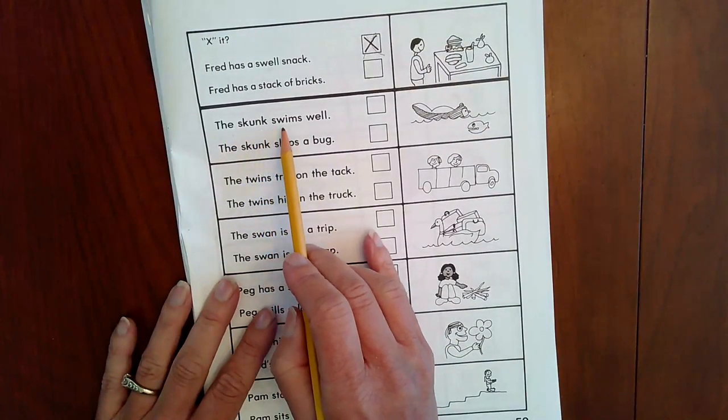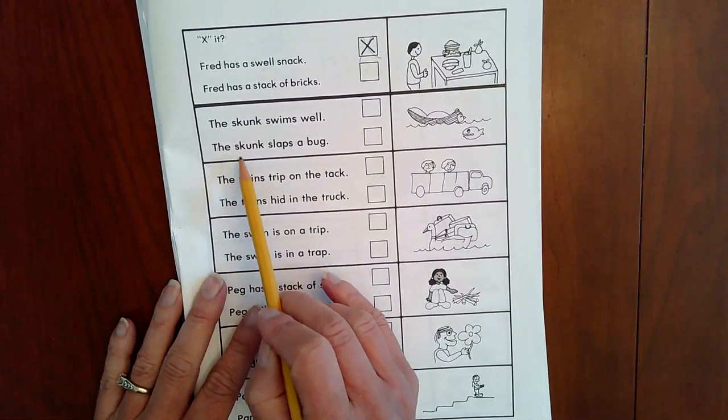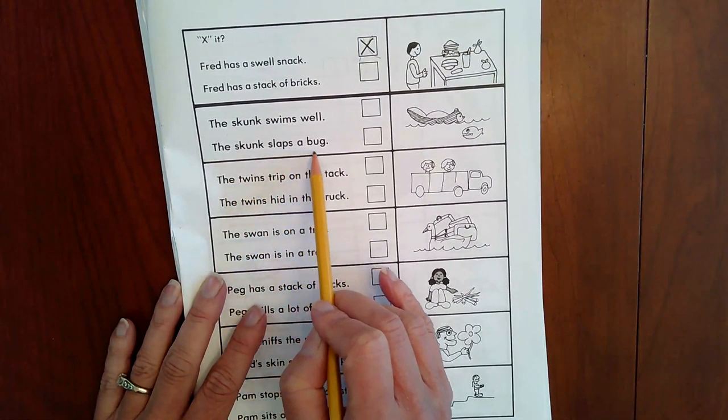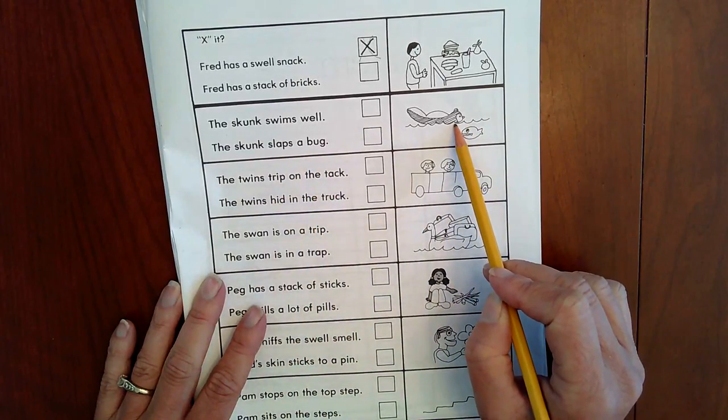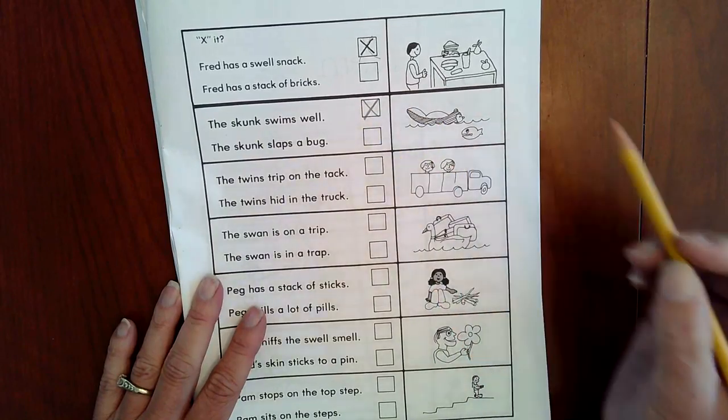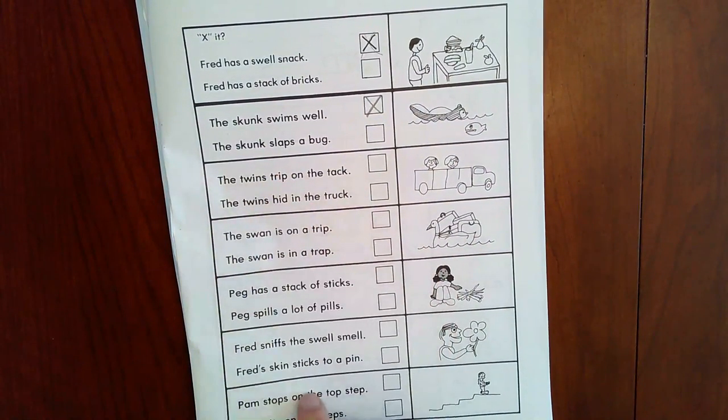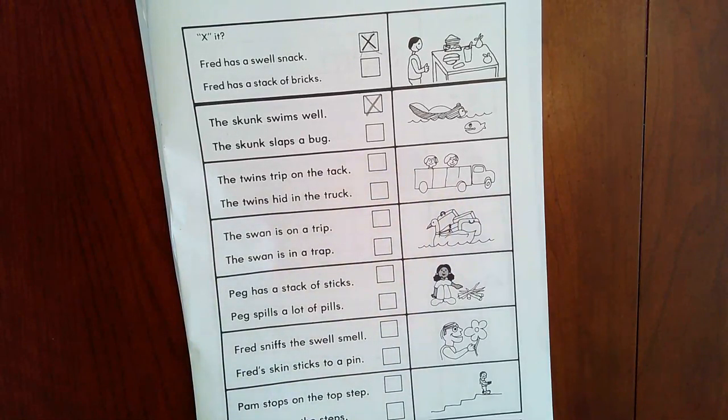The skunk swims well. The skunk slaps a bug. What is the skunk doing? He's swimming. This is tricky. Please read the words very carefully and click the box that matches the picture the best.